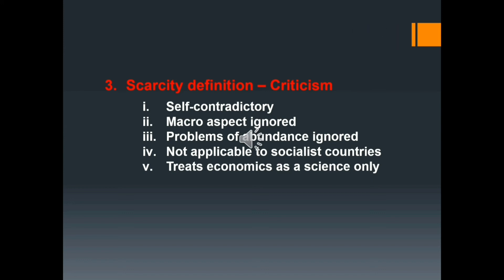In the same manner, in underdeveloped economies like India, the problem of unemployment exists due to abundance of manpower, an aspect totally ignored by Robbins. According to Professor Morris Dobb, Robbins' definition does not apply to socialist countries, where economic activities are subject to governmental control and regulation — in these countries, the government chooses between the ends and the means, so individual choice has no relevance. Robbins treated economics as a science only, viewing it as a science of value determination and choice-making. But many economists consider economics a social science that should study the problem of choice when it has a social aspect — that is, when an individual's choice affects other members of the society.